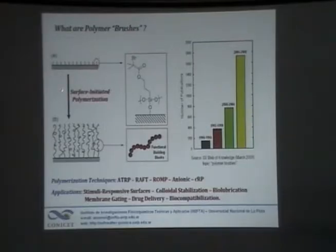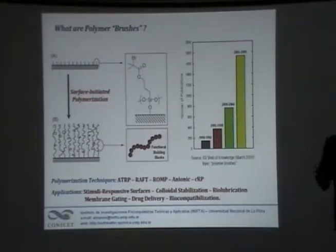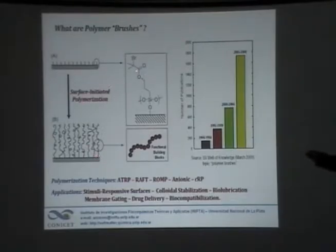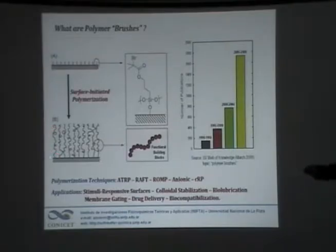If I put that substrate, that surface, in contact with the right monomers, the right catalyst, and the right solvent, I will be able to grow a polymer out of this surface. We'll grow the polymer in such a way that one end of the polymer will be anchored to the surface.